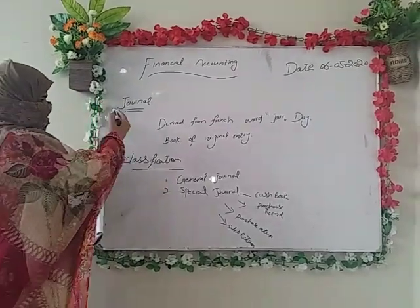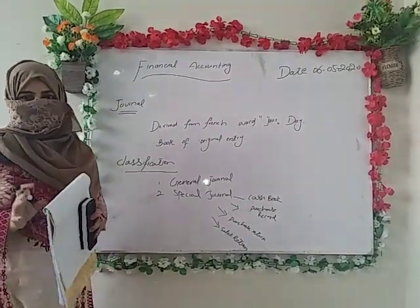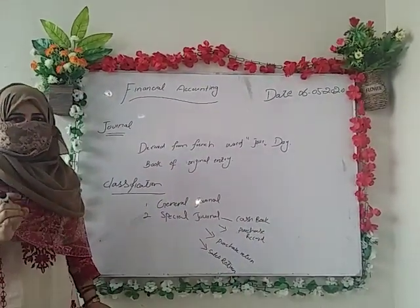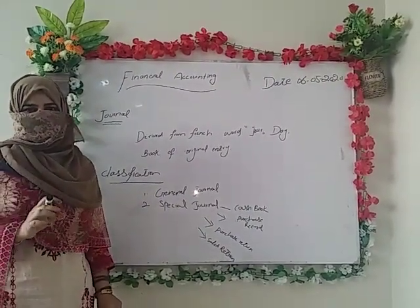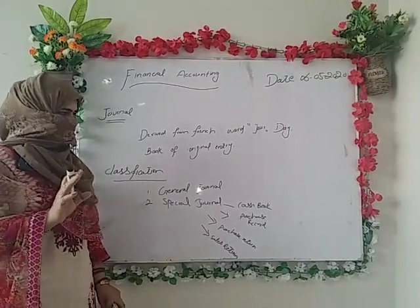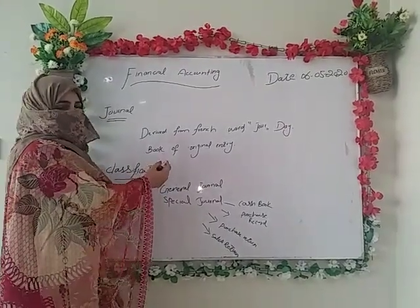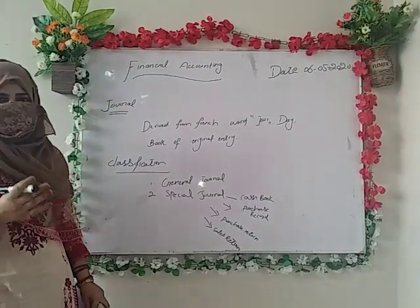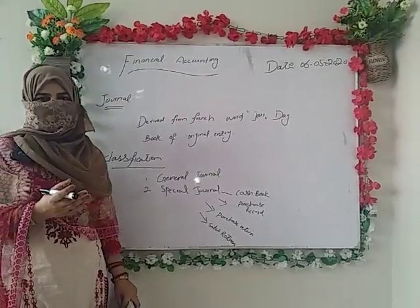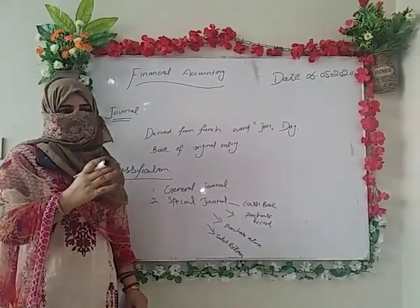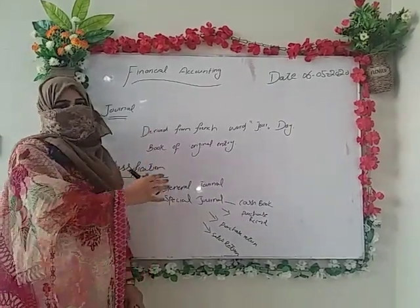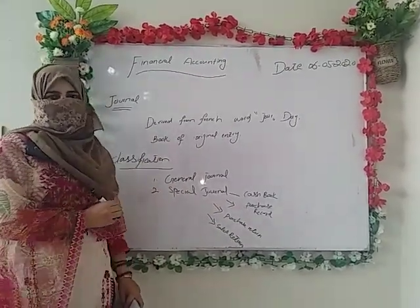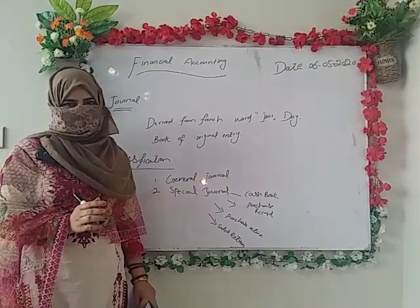The journal is basically derived from the French word 'jour', which means day. Journal is the first book in which accounting transactions are recorded — basically, it is a book of original entry. Journal is a book in which transactions are recorded in chronological order.